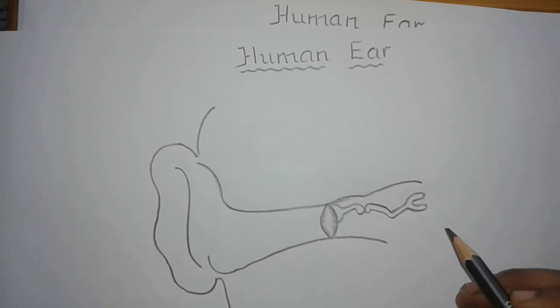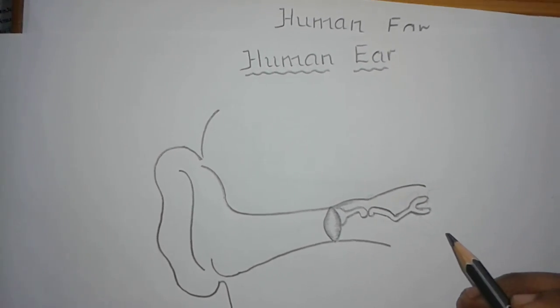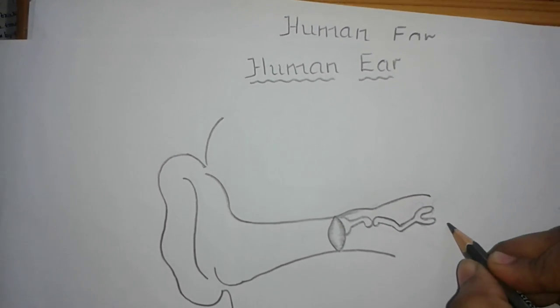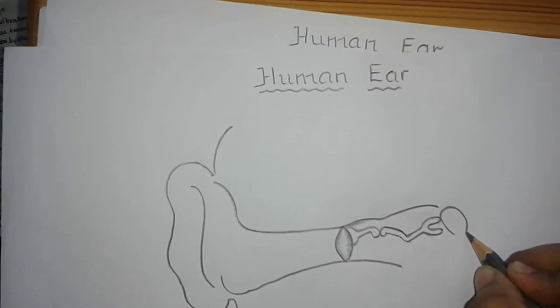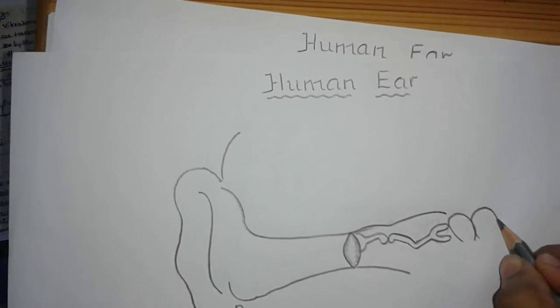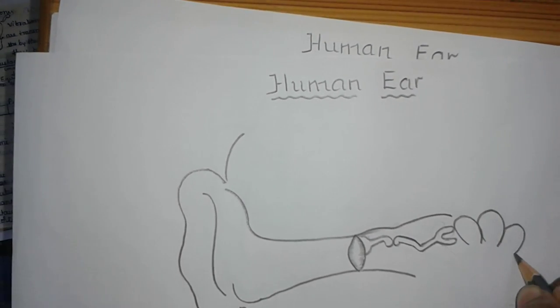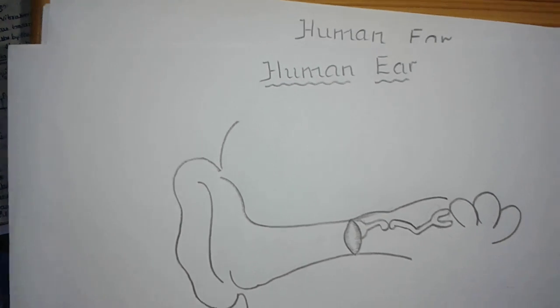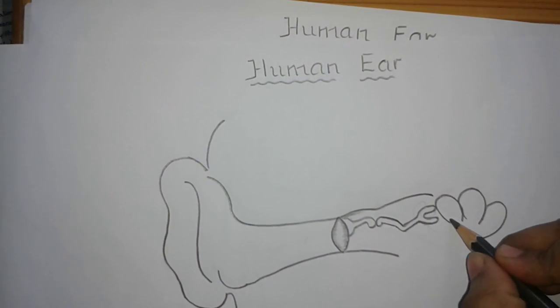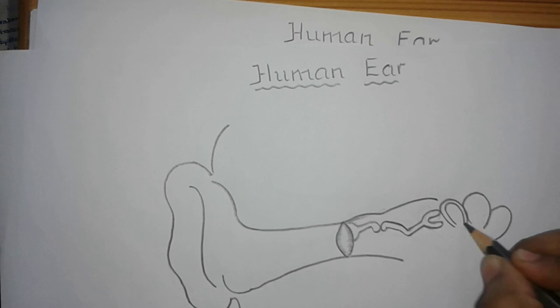Now the third part of the ear is the inner ear. The inner ear consists of an upper part called the utriculus. This utriculus consists of three semicircular canals. So draw the three semicircular canals like this.